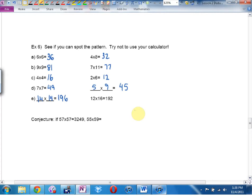So, if I tell you that 57 times 57 is 3,249, because it is, can you tell me what 55 times 59 is? Really? 3,245.